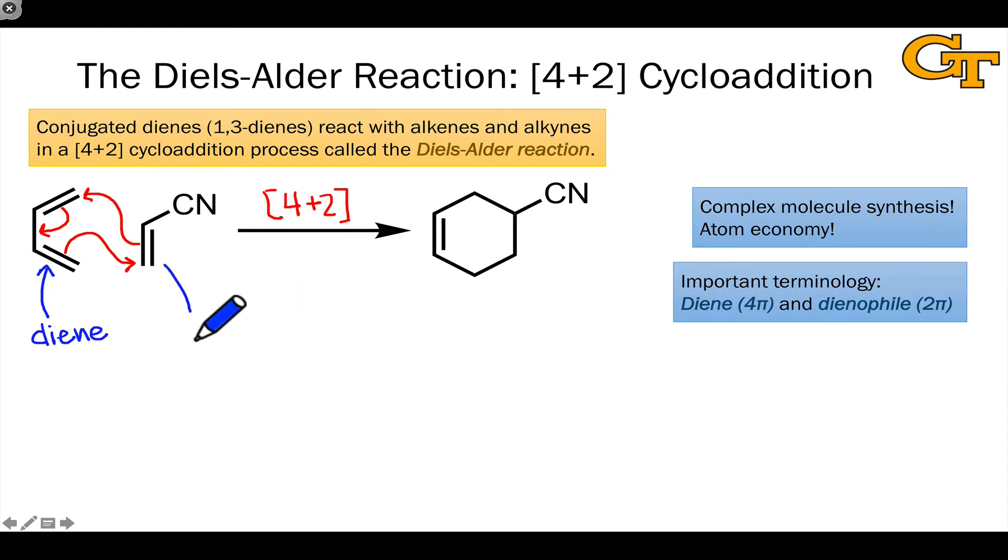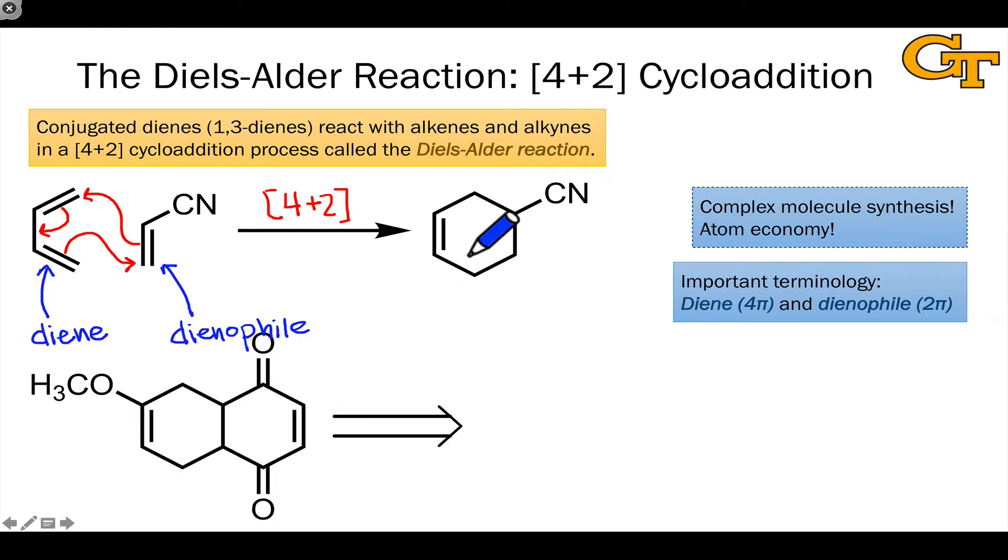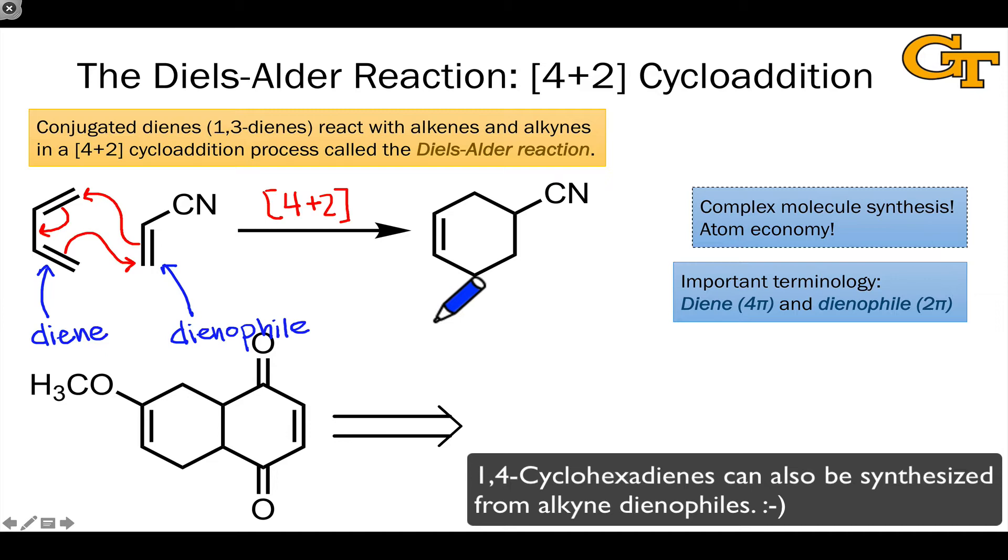The substrate that reacts with the diene is known as the dienophile. This is always the two-atom or two-pi component. And it's called a dienophile because it loves, quote unquote, it reacts with the diene. The product that forms in a Diels-Alder reaction of all carbon pi systems is always a cyclohexene, a six-membered ring containing a single double bond.